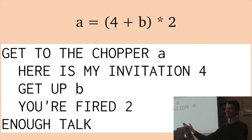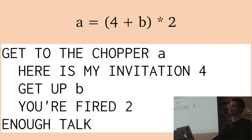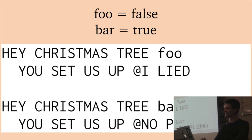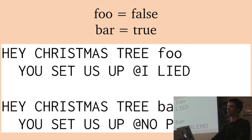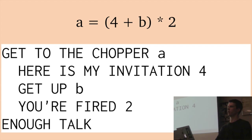If you want to define a variable, you start with 'Get to the chopper.' You have a set of statements starting with 'Here's my invitation.' To add something, you use 'Get up.' To multiply, you say 'You're fired.' You end statements with 'Enough talk.' To declare a variable in general, you yell 'Hey Christmas tree' and then 'You set us up.' They have two macros: 'I lied' which is false, and 'No problemo' which is true. There's no order of operations — it executes left to right — and there's only one type: a 16-bit integer.